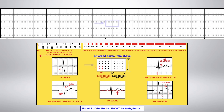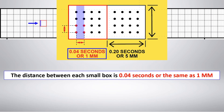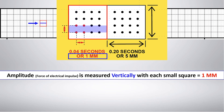This graphic illustrates the EKG paper that consists of horizontal and vertical lines that form a grid. The distance between each small box is .04 seconds, or the same as one millimeter. Time is measured horizontally, with each small square representing .04 seconds. Amplitude — the force of electrical impulse — is measured vertically, with each small square equaling 1 millimeter.